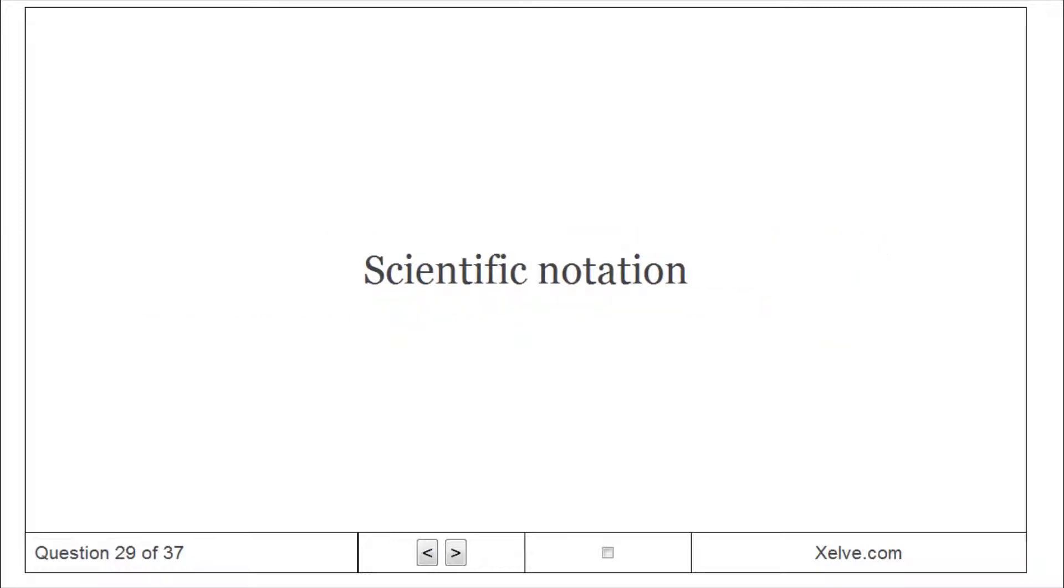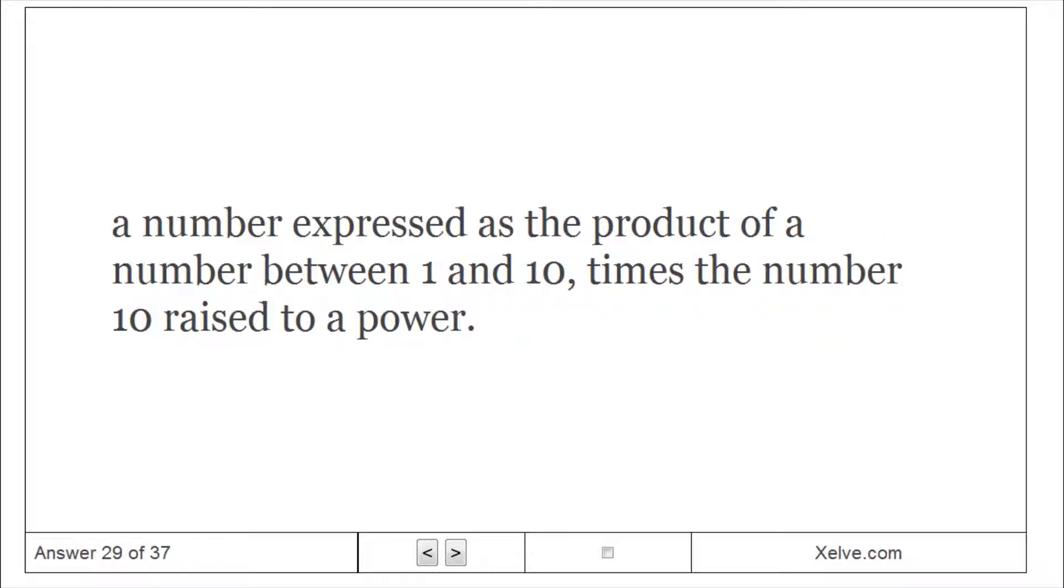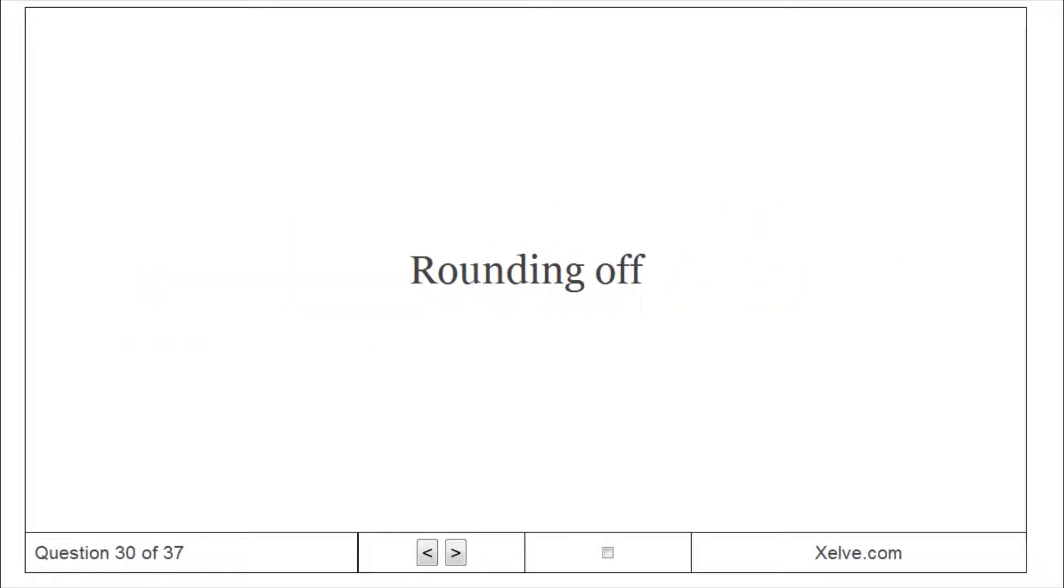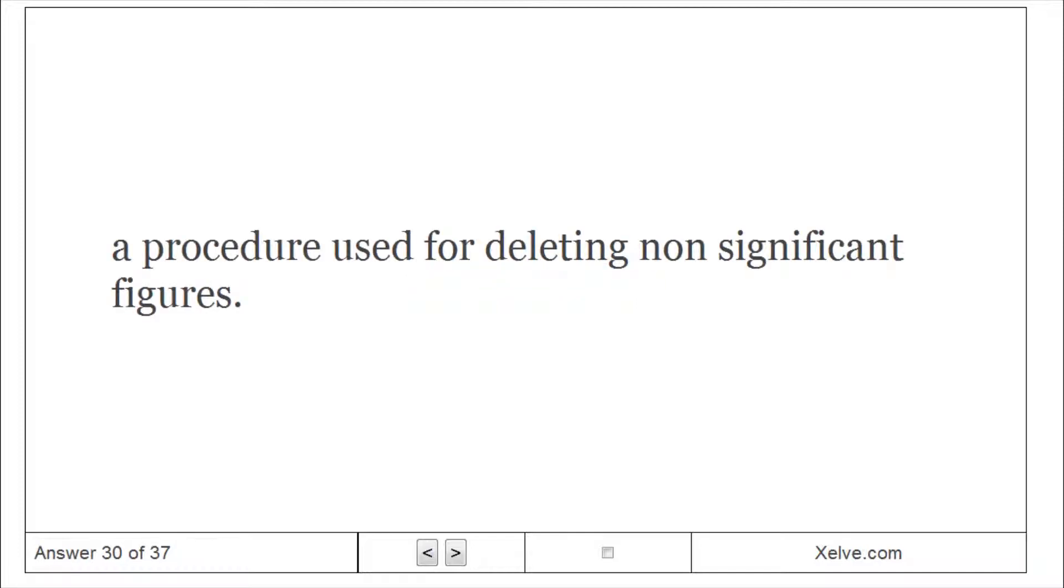Scientific Notation: A number expressed as the product of a number between 1 and 10, times the number 10 raised to a power. Rounding Off: A procedure used for deleting non-significant figures.